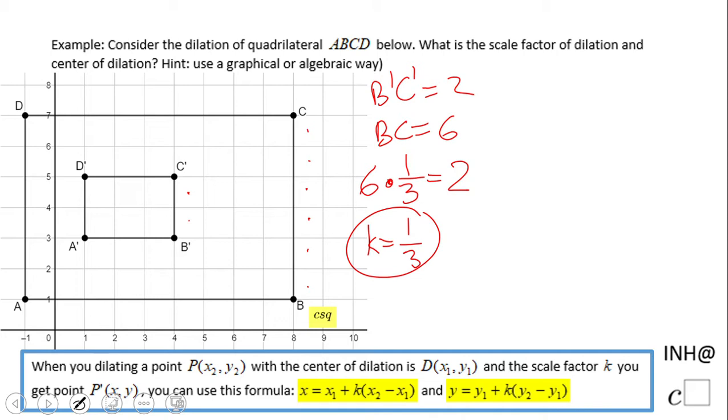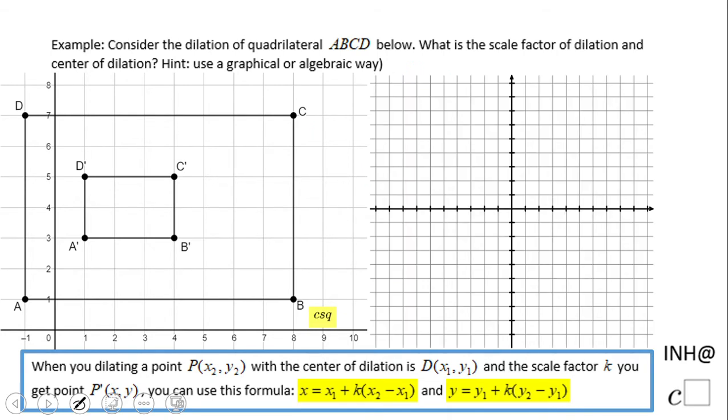So let's take a look. I'm going to bring some paper and I'm going to take two points. Let's say I'm going to take point C prime and C, so four and five: one, two, three, four, one, two, three, four, five. This is C prime. And point C, which is eight and seven: one, two, three, four, five, six, seven, eight, one, two, three, four, five, six.